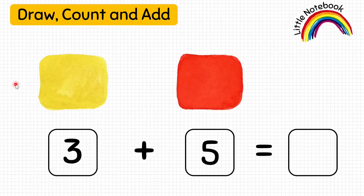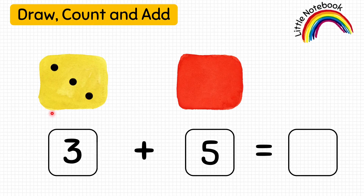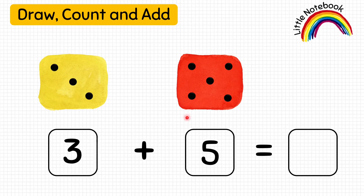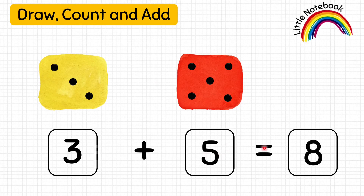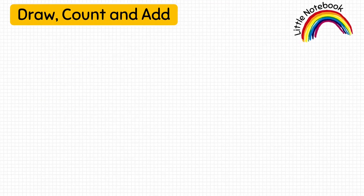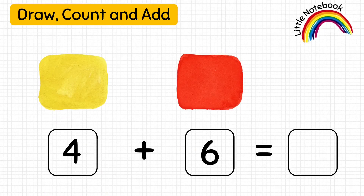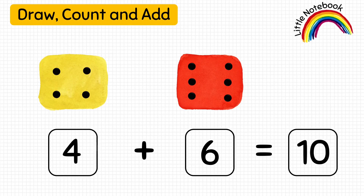Let's do one more question. The first number is three, so the kid will make three dots in the yellow dice. The next number is five, so make five dots. Now to find three plus five, count all the dots: one, two, three, four, five, six, seven, eight — write eight. So three plus five equals eight. The third question is for your practice — solve it and you should get four plus six equals ten.